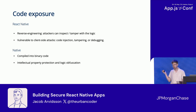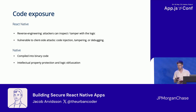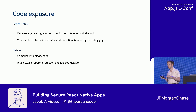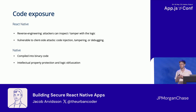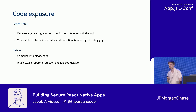On native, code is compiled down into binary — APK files, IPA files — and binary code is much more difficult to reverse engineer. It's much better for intellectual property protection and logic protection.